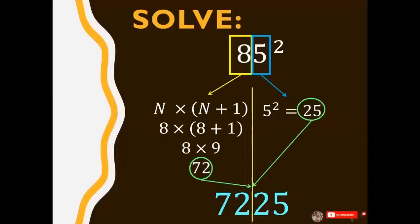How did you find the trick? Is it easy now to solve or square numbers ending in 5? Comment your answers below.